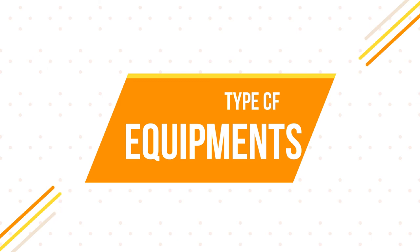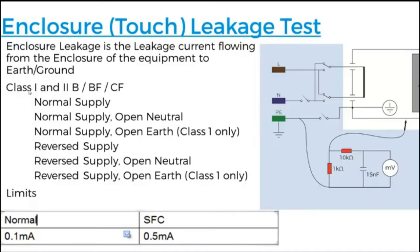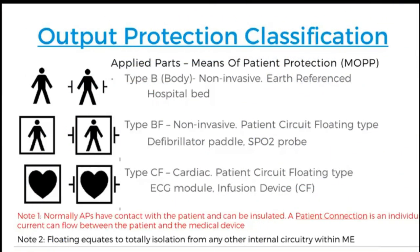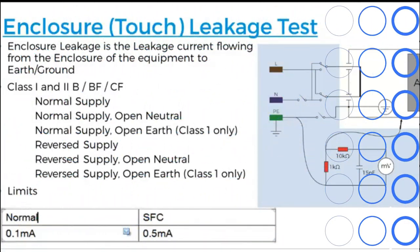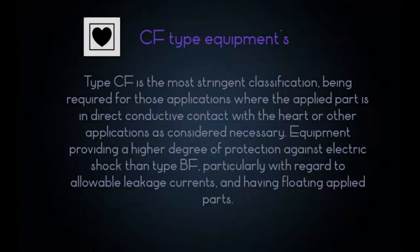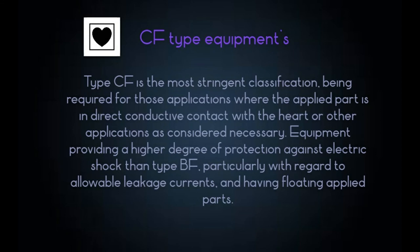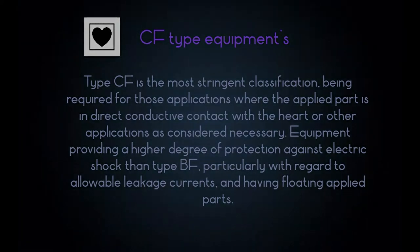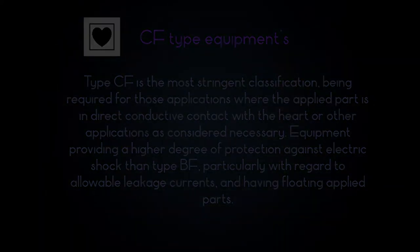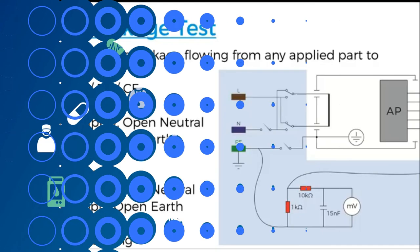The last type is CF Equipment. Type CF is the most stringent classification, being required for those applications where the applied part is in direct conductive contact with the heart or other applications as considered necessary. It provides a higher degree of protection against electric shock than Type BF, particularly with regard to allowable leakage currents and having floating applied parts.